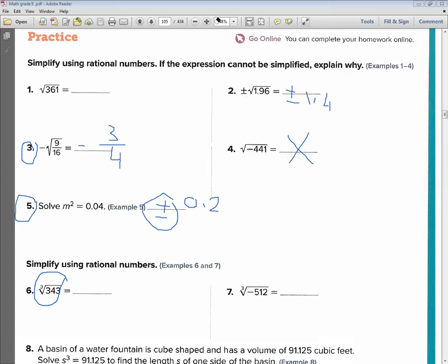Okay, no problem. 343. I think you have to use 7. 343. Okay, divided by 7. Try it, please.